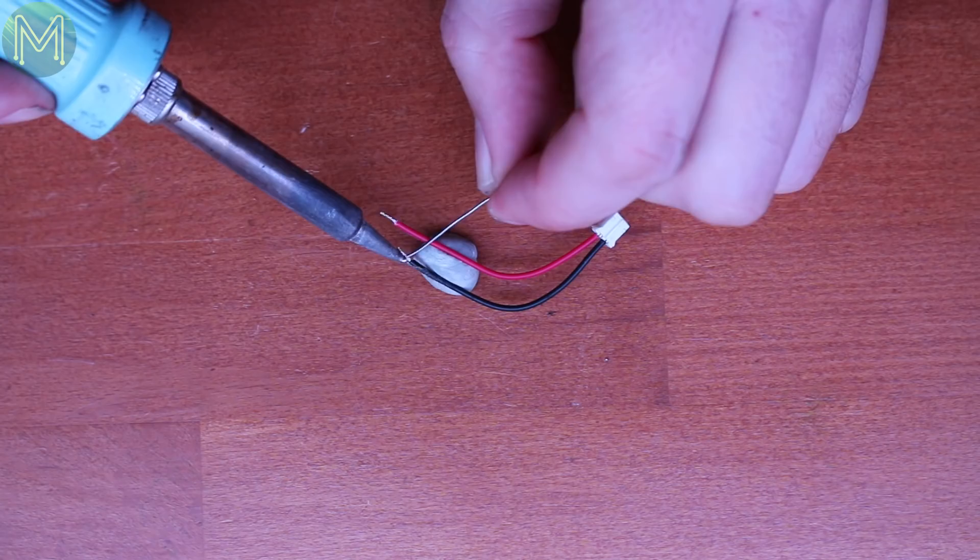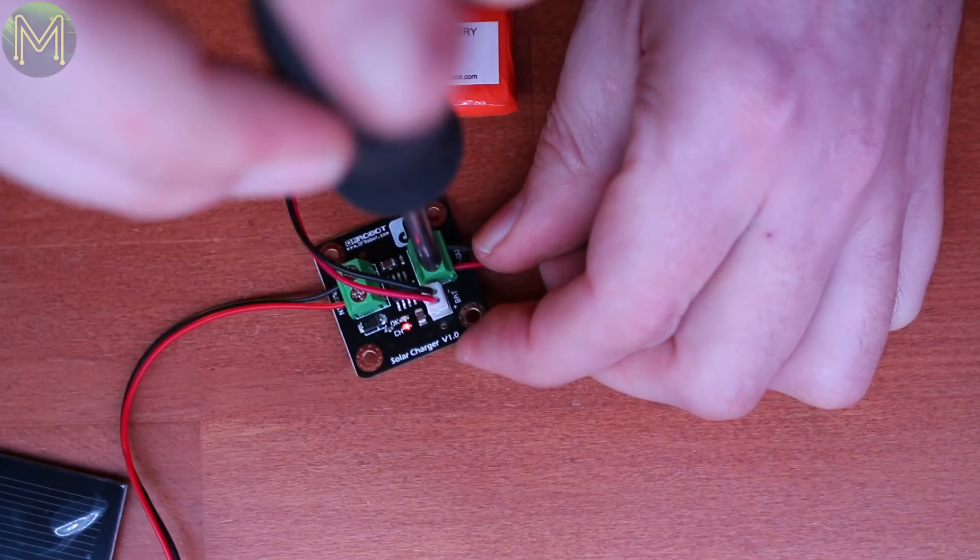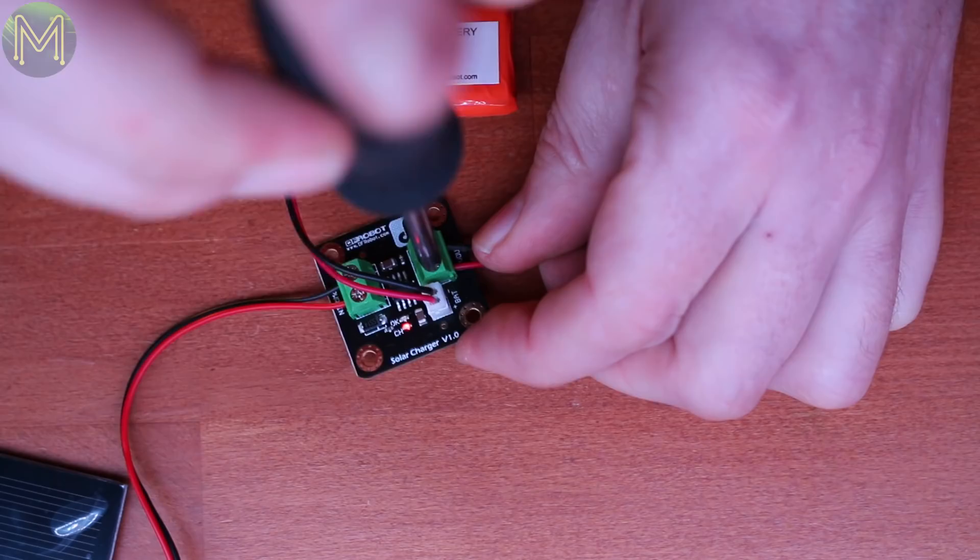So I prepared a JST header to be screwed into the output terminal block, which would provide uninterrupted power to my ESP8266. Even better. So next I checked out the distance sensor.